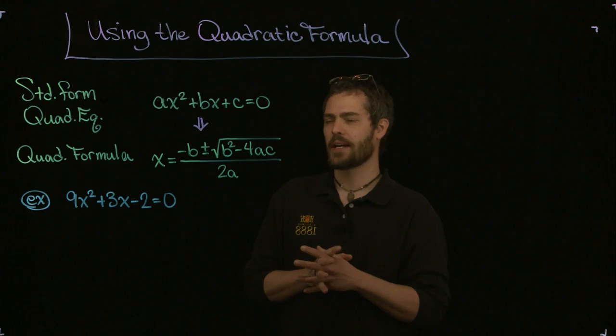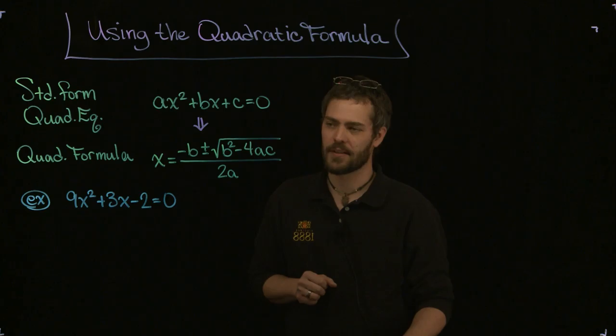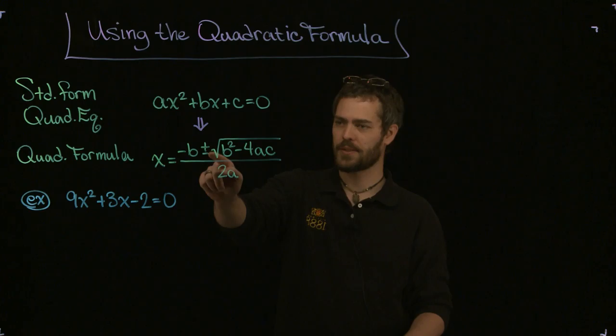Just to remind you, we have the standard form quadratic equation, ax squared plus bx plus c equals 0, from which we can derive the solutions using completing the square. I showed that in another video. Here are the solutions: x equals negative b plus or minus the root of b squared minus 4ac all over 2a.